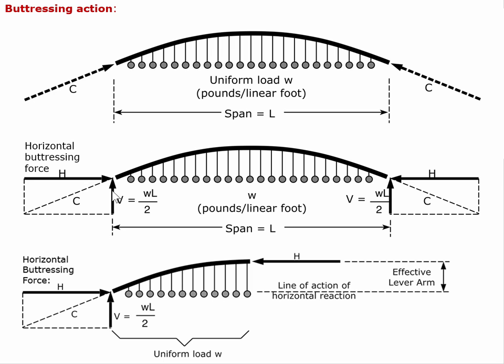The vertical force V is equal to WL over 2, where L is the span and W is the uniformly distributed load along the horizontal. The entire downward force on this arch is WL, and we'll have a support force at each end of WL over 2. There is also a horizontal force which, combined with the vertical force, produces a resultant reaction parallel to the direction of the arch — tangent to the arch at the point of support.